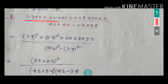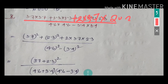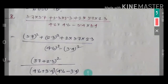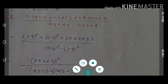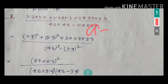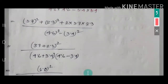Now observe the next part: 3.7 into 3.7, 2.3 into 2.3, plus 2 into 3.7 into 2.3. That is 3.7 squared plus 2.3 squared plus 2 times 3.7 times 2.3, which is in the form a squared plus b squared plus 2ab. This is the first identity formula: a plus b whole squared. So a is 3.7 and b is 2.3.